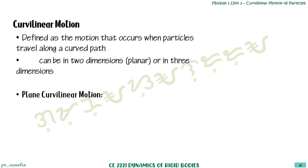In curvilinear motion, we have what we call plane curvilinear motion, also called rectangular coordinate motion, in which we define our motion in terms of x and y.